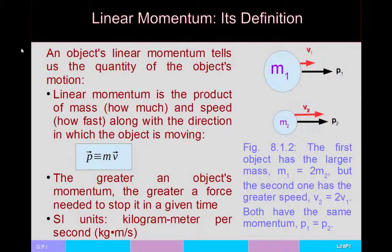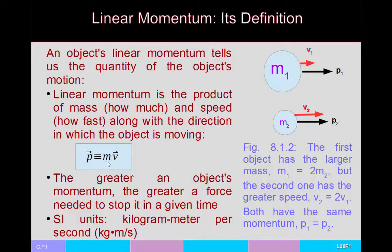So let's get a nice definition for linear momentum. Linear momentum is the product of the mass, the speed, and the direction — in other words, it's the product of the mass times the velocity of an object. You can think of it as: how much stuff is moving, how fast is it moving, in which direction is it moving? In equation form, momentum — we use a lowercase p — is defined as p = m × v, mass times velocity.